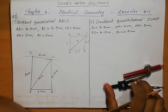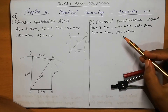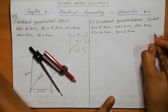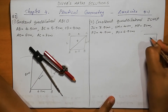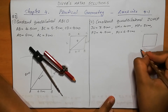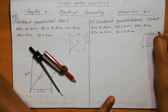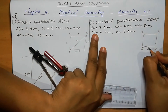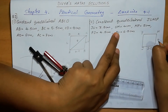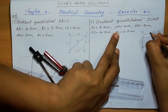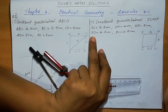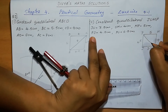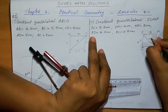Second question: Construct quadrilateral JUMP. J-U = 3.5, U-M = 4, M-P = 5, P-J = 4.5, P-U = 6.5. We can do the rough figure first with these measurements.